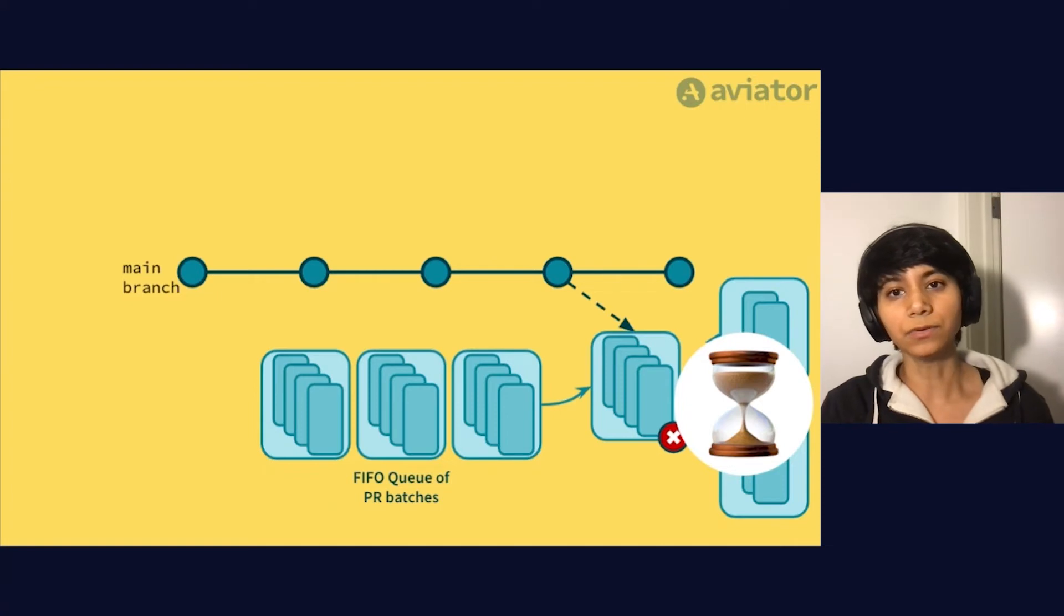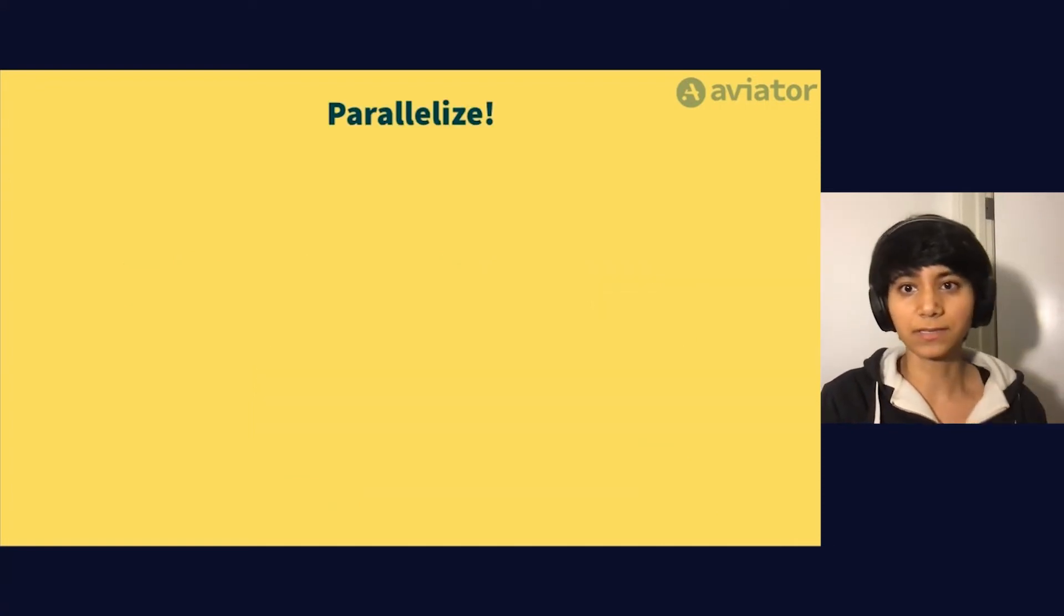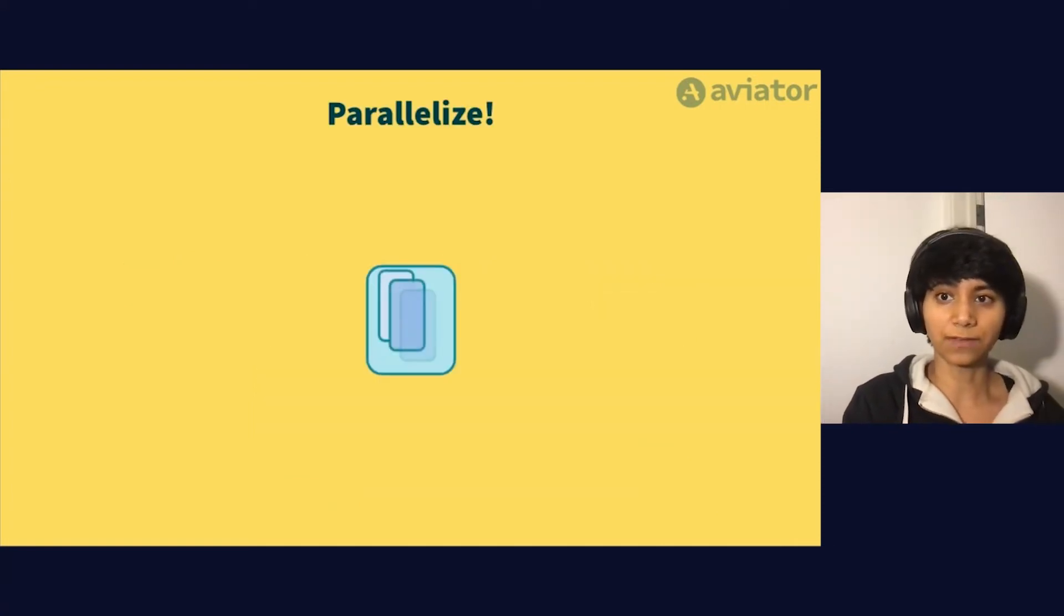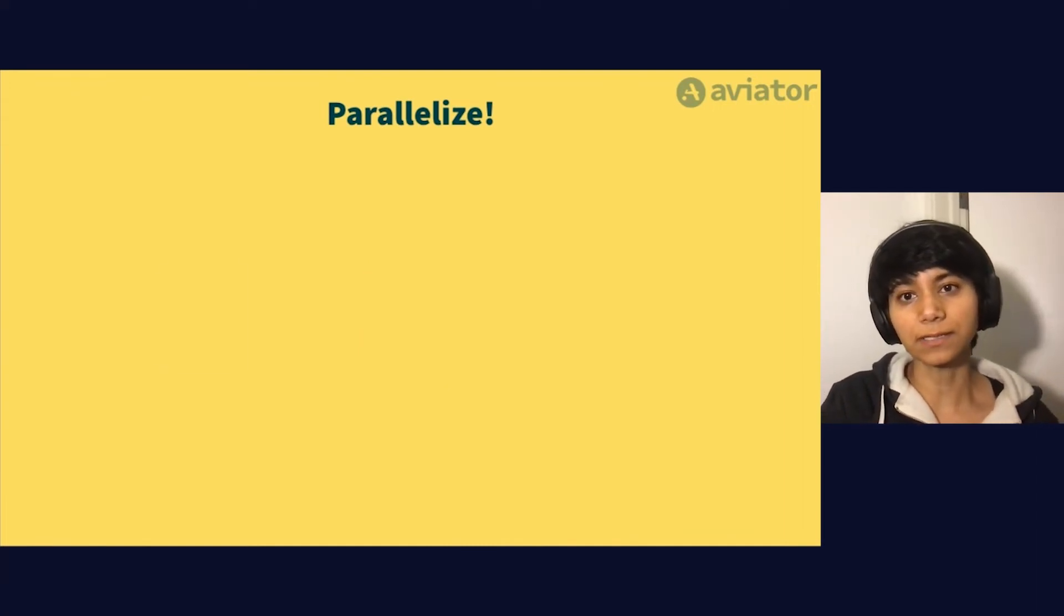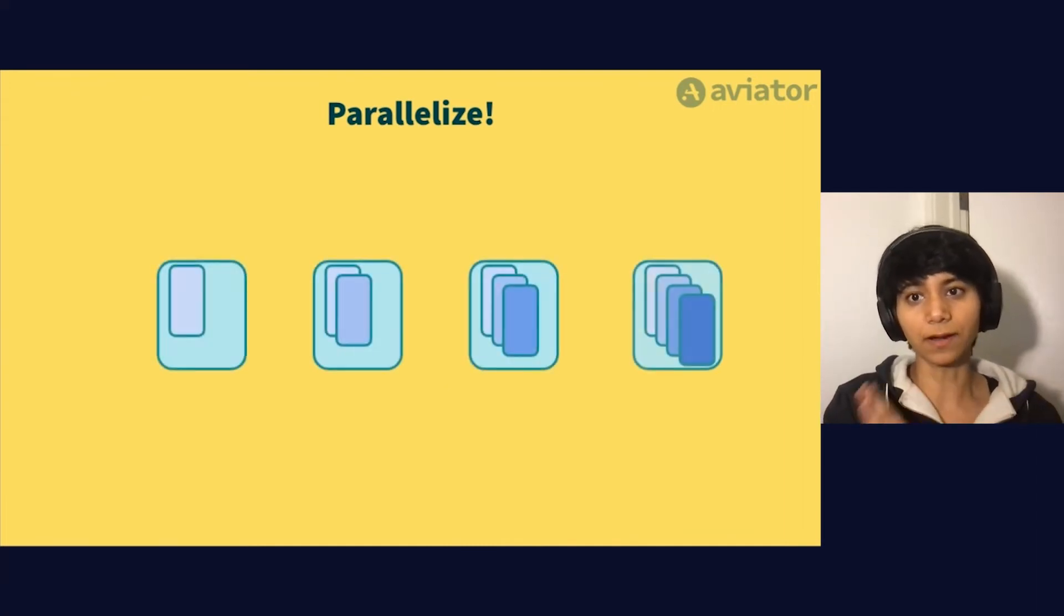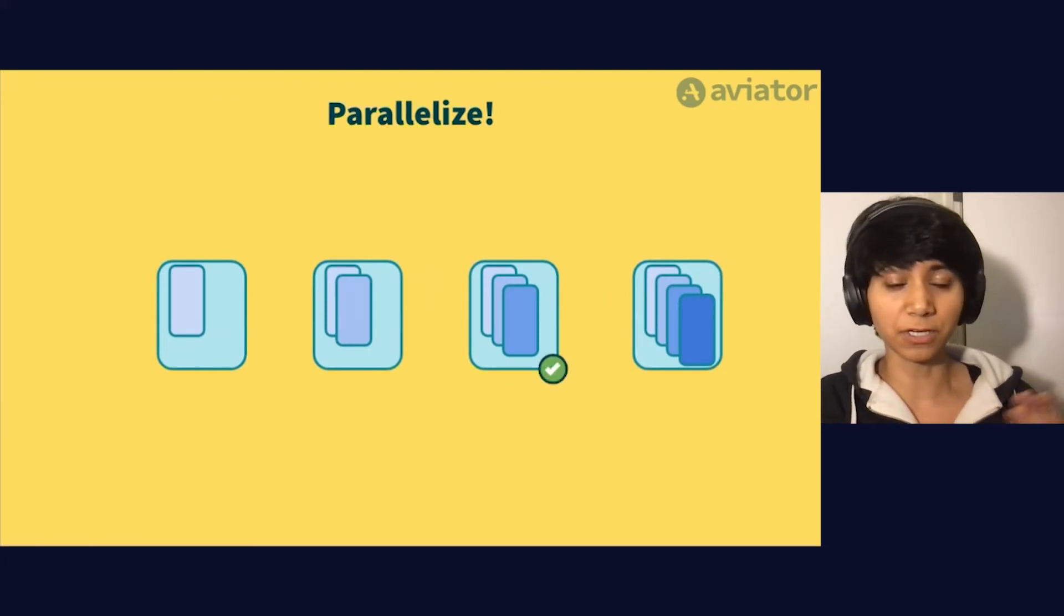So one thing you could then do is parallelize these PRs. Instead of waiting for a batch of, say, four or five to fill up before starting tests, you can kickstart testing on various subsets of PRs as the batch fills up. This way, whichever subset works, you can merge that in.